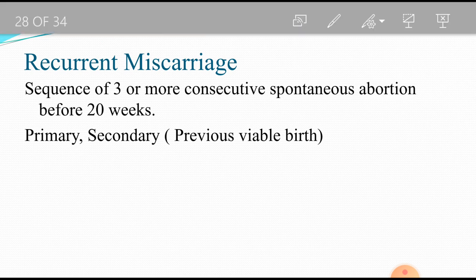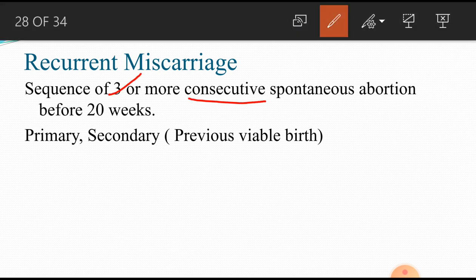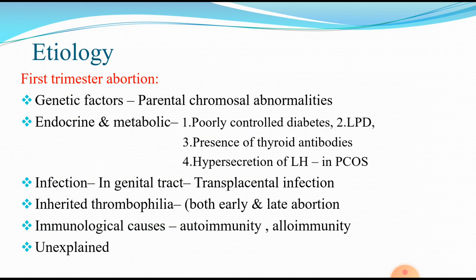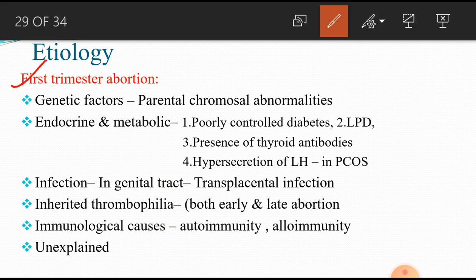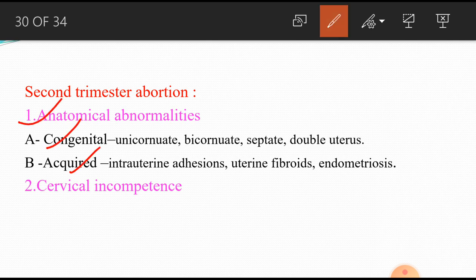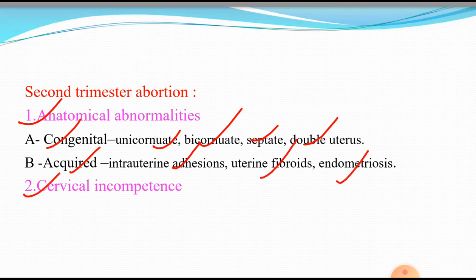Recurrent miscarriage means three or more consecutive spontaneous abortions before 20 weeks of gestational age. It is called recurrent miscarriage. This can be primary or secondary. Secondary means after a previous viable child, three or more miscarriages occur. First trimester causes include genetic factors, endocrine or metabolic factors, infection, inherited thrombophilia, immunological causes, or unexplained. Second trimester causes include anatomical abnormalities — congenital or acquired — such as unicornuate uterus, bicornuate uterus, arcuate uterus, double uterus, intrauterine adhesions (Asherman's), uterine fibroid, endometriosis, or cervical incompetence.